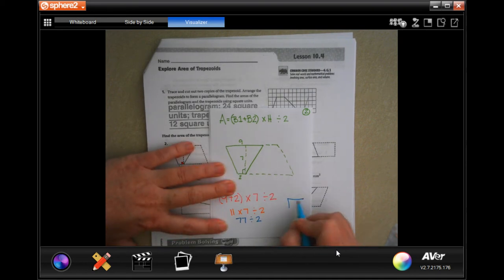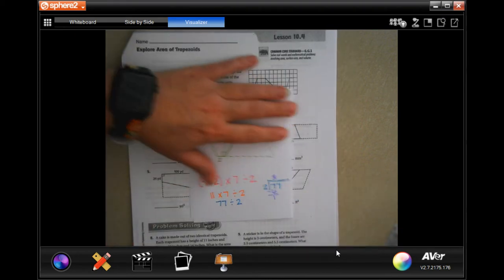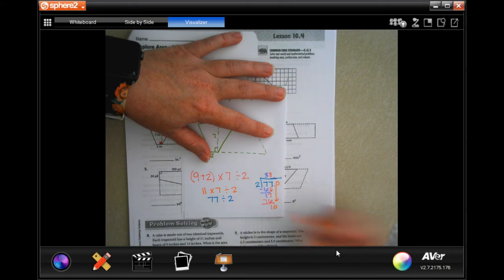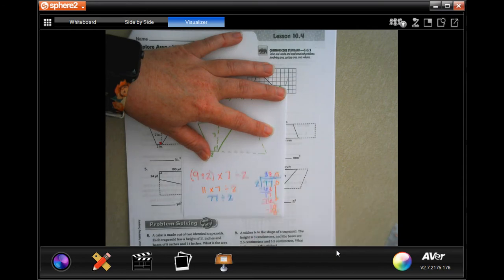So I'm going to go over here and I'm going to put 77 in the box and 2 outside. 2 is going to go into 7, 3 times. 3 times 2 is 6, subtract, get 1. 1 is smaller than 2, so I'm going to bring down my 7. 2 goes into 17, 8 times. 8 times 2 is 16, subtract, get 1. Now I need to add a decimal and a 0 so that I can bring down. 2 goes into 10, 5 times. 5 times 2 is 10, subtract, get 0.